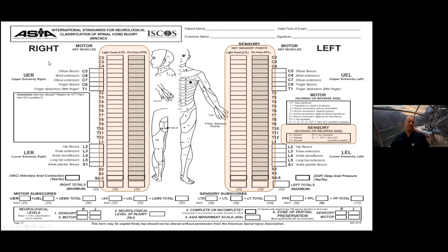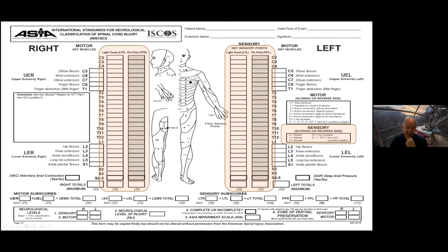We score all 28 dermatomes on the right and left sides for both light touch and pinprick: 0 is absent, 1 is altered, 2 is normal, and NT is not testable. If you believe a non-SCI condition is contributing to the score, note that in the comment box.